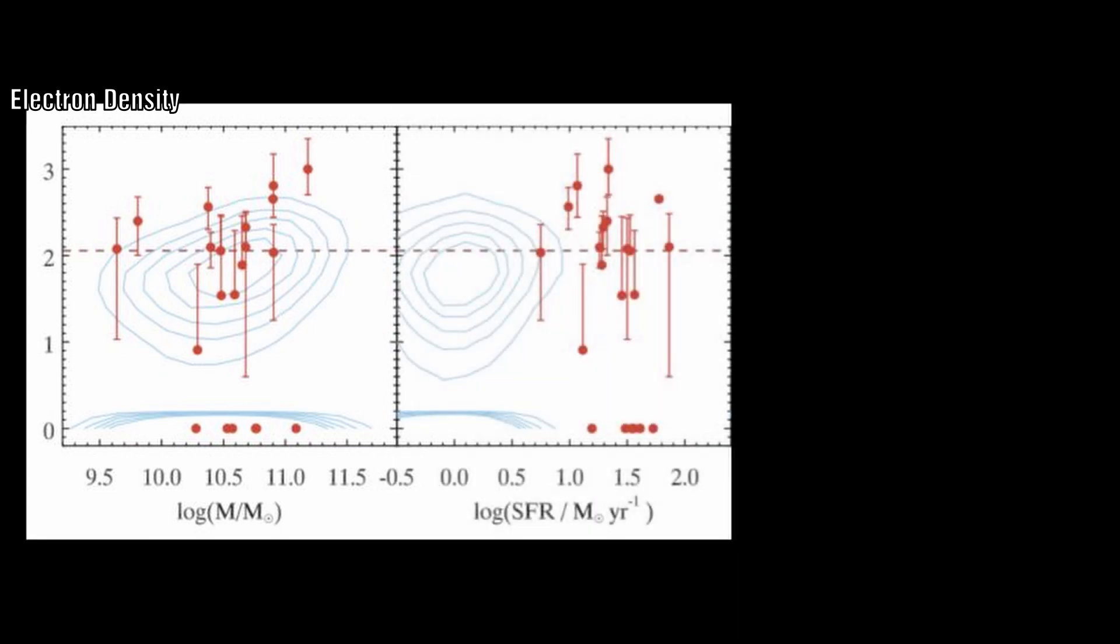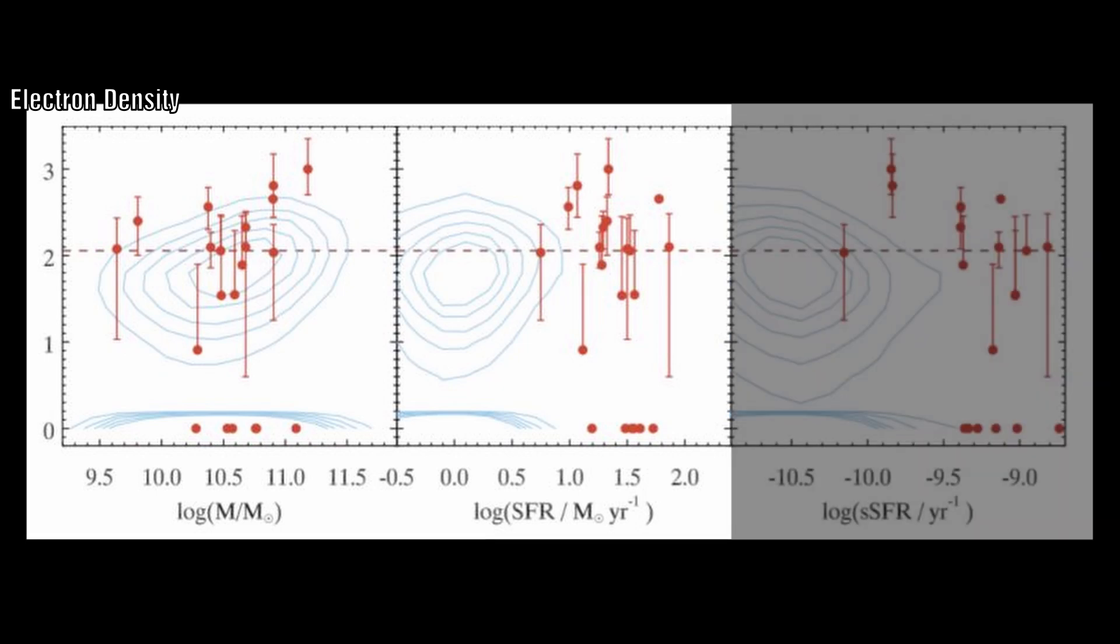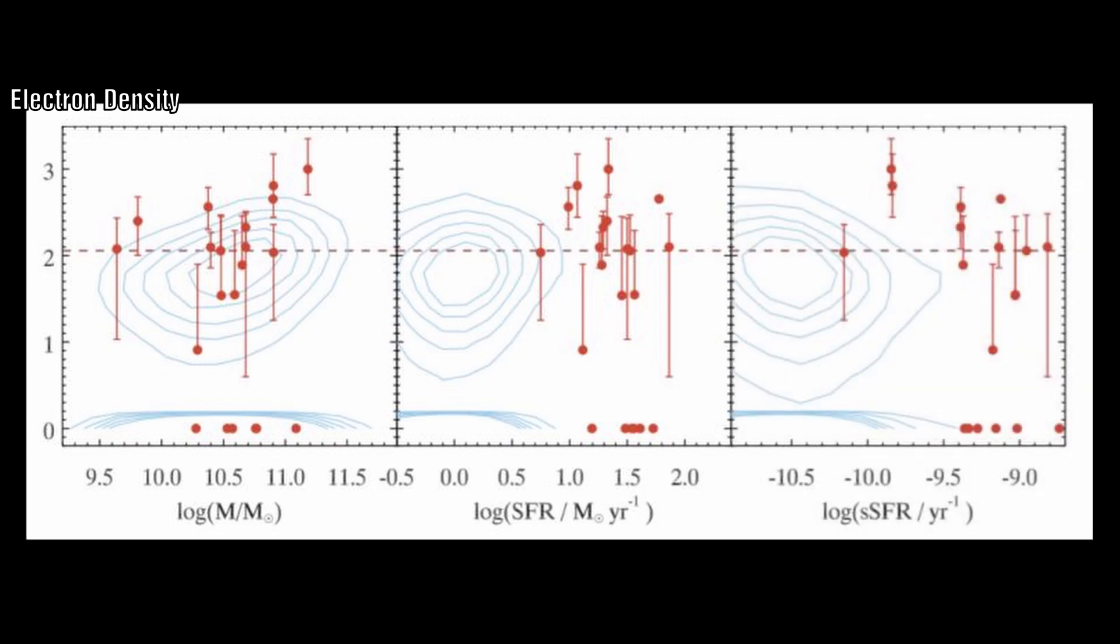In the next diagram we see star formation rate plotted against electron density, and lastly we see the specific star formation rate plotted against electron density, which really means star formation rate divided by mass.